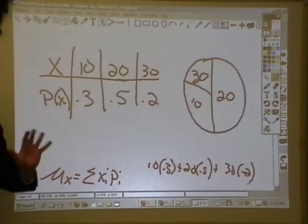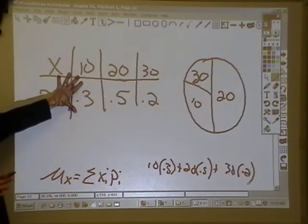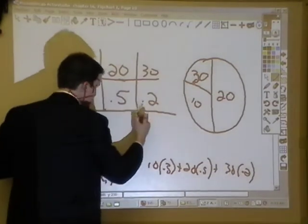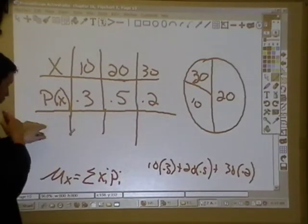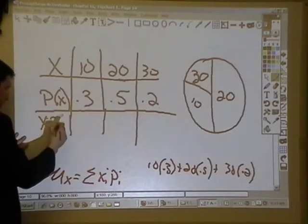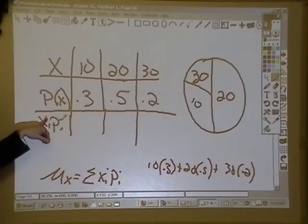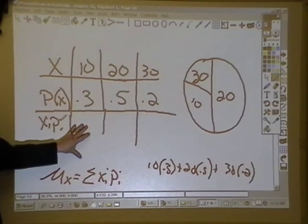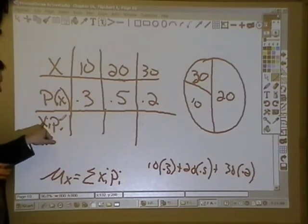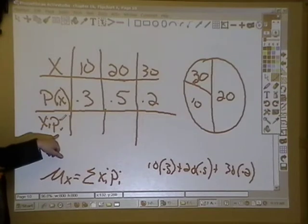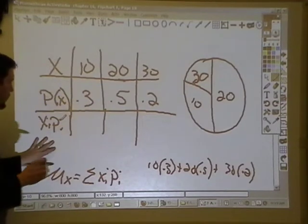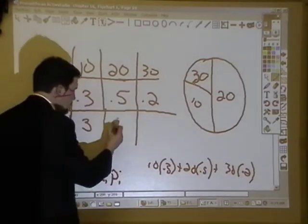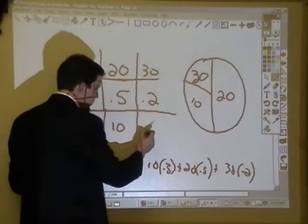But what we're going to do is actually make life a little bit easier and more organized by taking this model, and we're going to extend one row down. And we're going to name this row X sub I P sub I. So each value of X times its associated probability X sub I times P sub I, 10 times 0.3 is going to be 3. 20 times 0.5 is going to be 10. And 30 times 0.2 is 6.